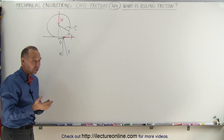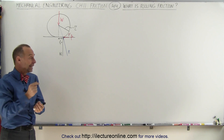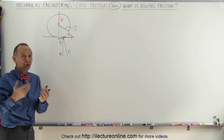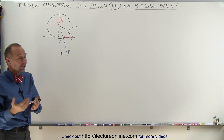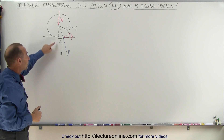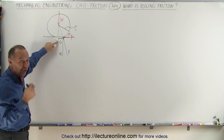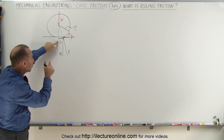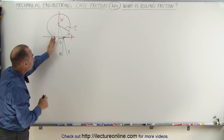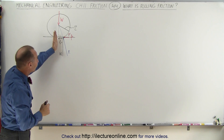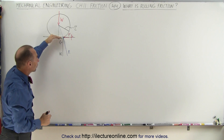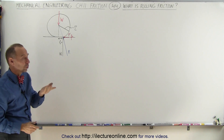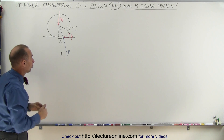That's kind of interesting because in this case B is actually a length and it has units in meters. So when we talk about the coefficient of rolling friction, we actually talk about the distance of deformation from the very center of the wheel to where the wheel or tire is no longer touching the surface.